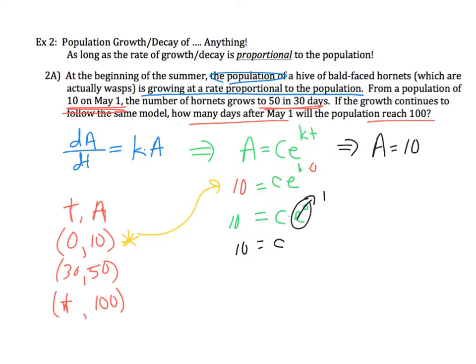So that means I can rewrite this again and now I've got A equals 10 times e^(kt). Getting there—now I just have one unknown constant K. Let's go back over here and take the second piece of information and plug it in.